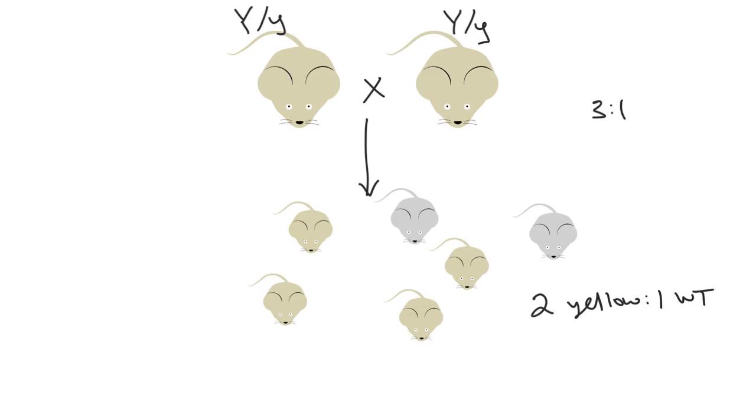Now let's perform a chi-square test to compare the observed number of yellow and wild type offspring in this cross to the expected numbers in either situation where there was a 3 to 1 ratio or a 2 to 1 ratio of yellow to wild type offspring.